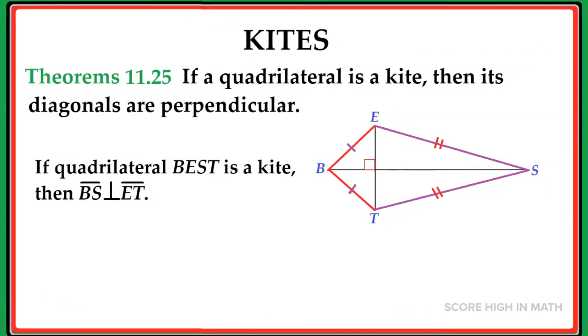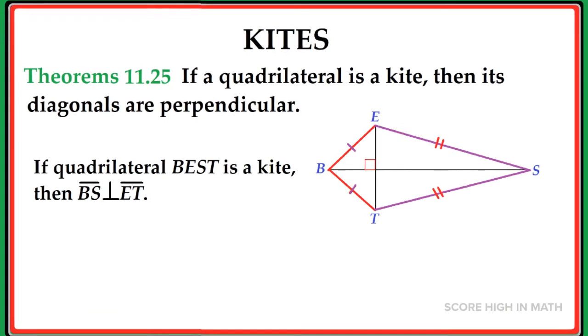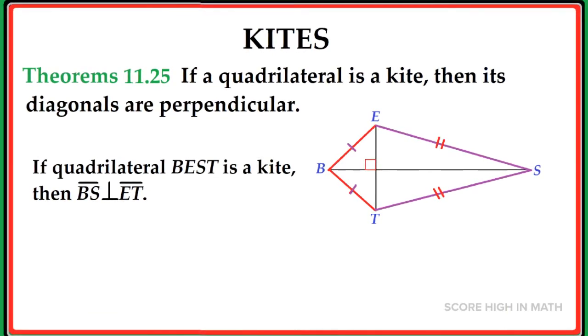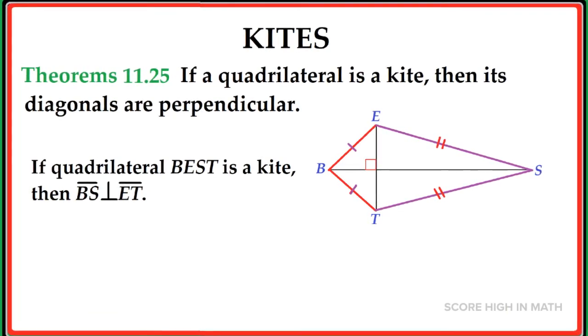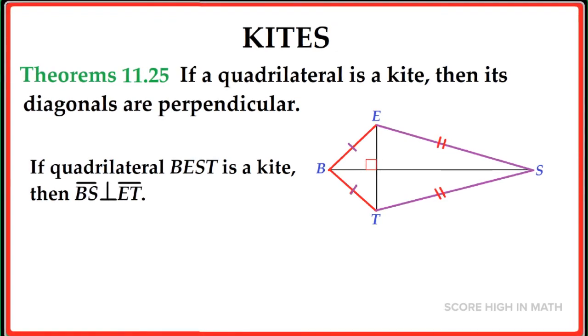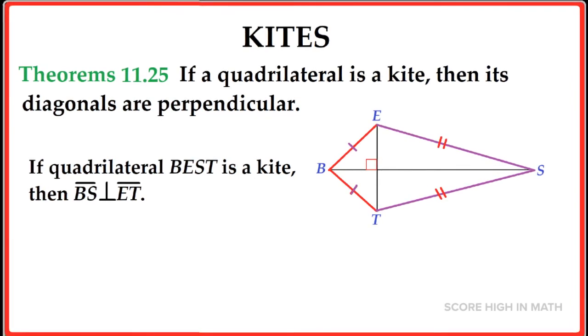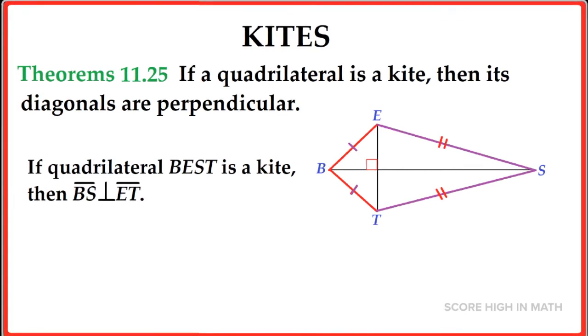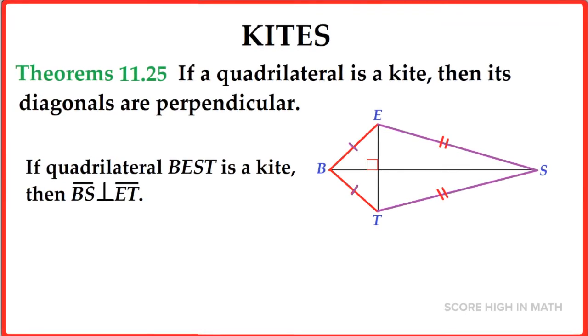To wrap it up, remember in Theorem 11.25, if a quadrilateral is a kite, then its diagonals are perpendicular. So line segment BS is perpendicular to line segment ET.